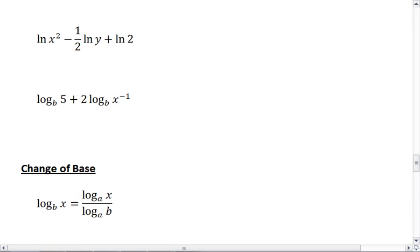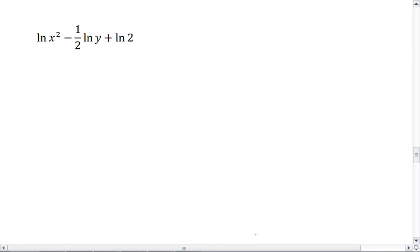For the second one, we have ln of x squared minus 1 half ln y plus ln of 2. Since these are all ln, that means they have the same base, a base of E.